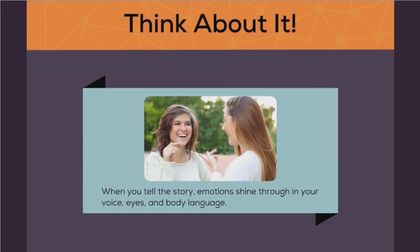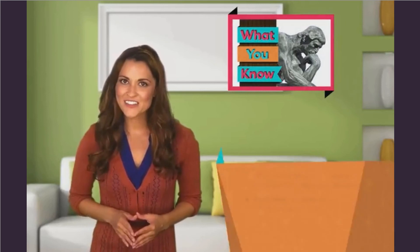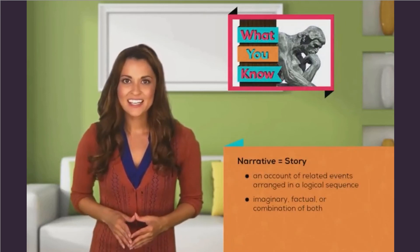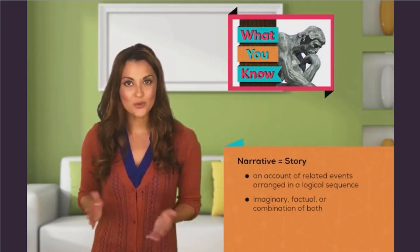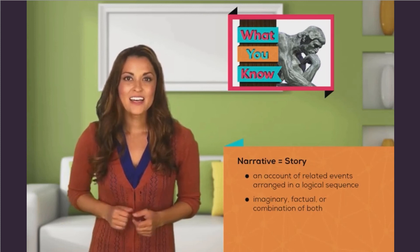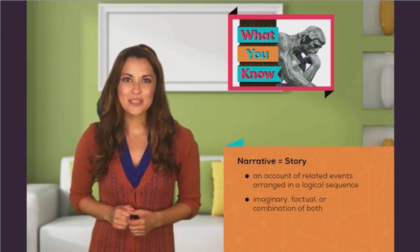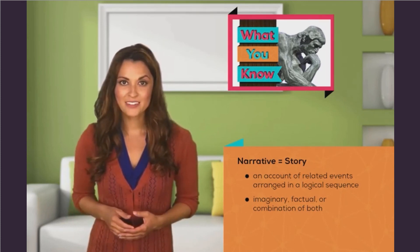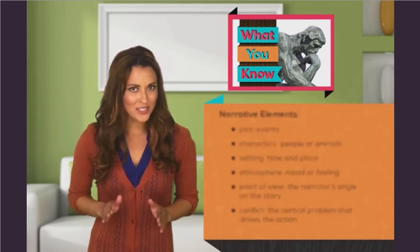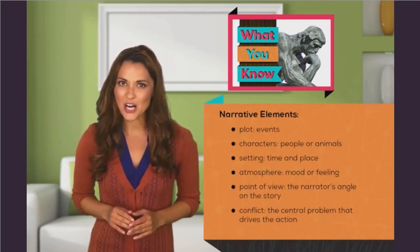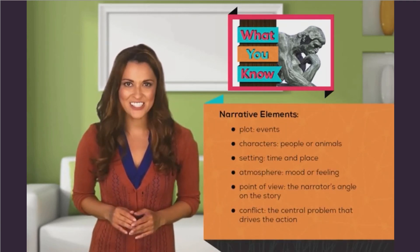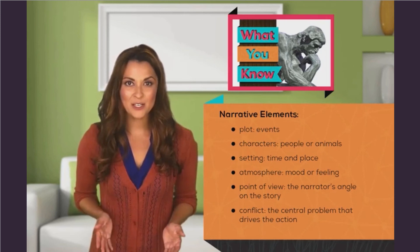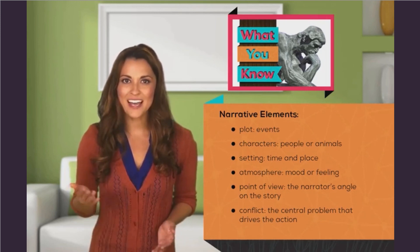Let's take a look at a section later in the lesson. Hi. You already know a narrative is a story — an account of related events arranged in a logical sequence, fictional, factual, or both. Here's a good example of a real person providing instruction for the student. You also know that a well-written narrative has the elements of plot, characters, setting, atmosphere, point of view, and conflict.